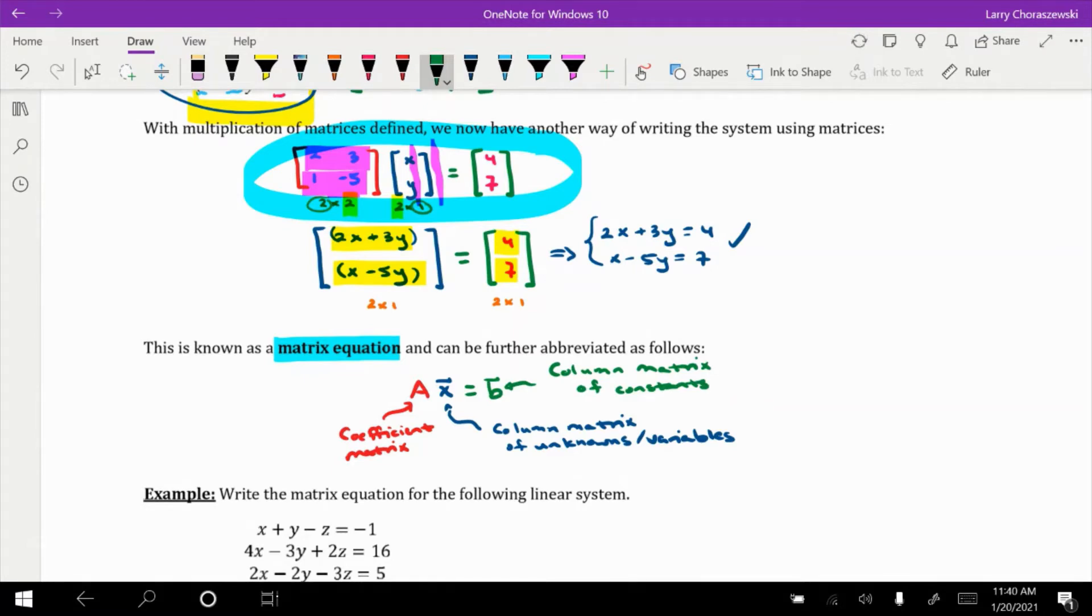Now, I want to kind of throw us back to a very, very familiar scenario. Keep in mind, when we're solving a system, we're trying to find values for all the variables. Now, let's say that this were, not this, but let's look at this equation. 3X equals 12. If I wanted to solve for X, what's one thing I could do? You can divide by 3. You can divide by 3. And we get X equals 4. So, you could isolate X by dividing each side by 3.